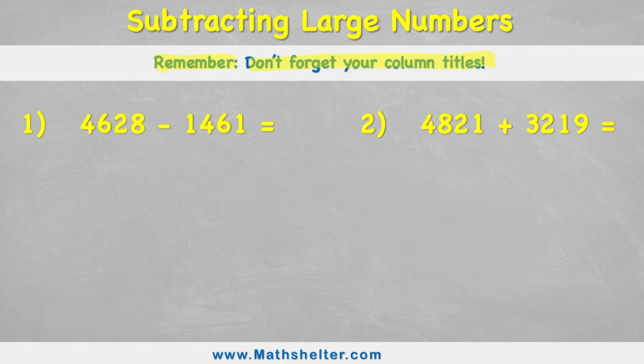Let's see what I mean by that. Our first question is 4,628 subtract 1,461, so we're working with thousands. Which means when I put my column titles, I'm going to need ones, tens, hundreds, and thousands. Now I can put my numbers in place. I have four thousand six hundred and twenty-eight subtract one thousand four hundred and sixty-one.